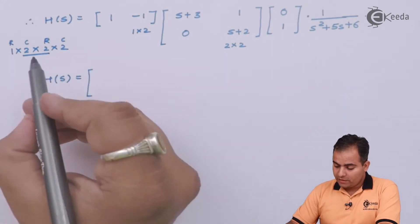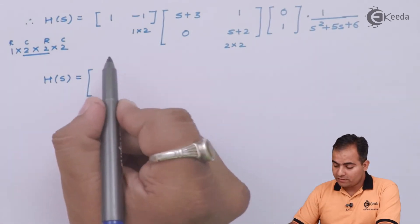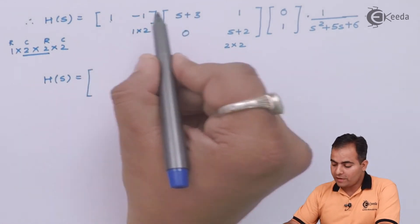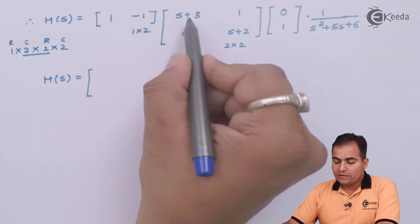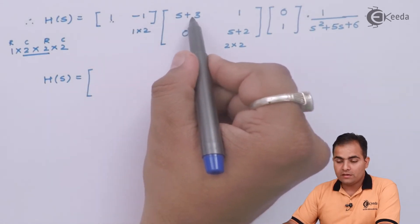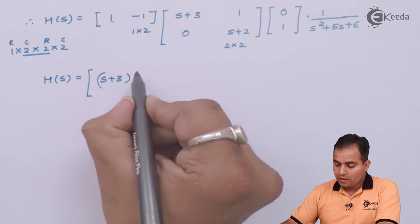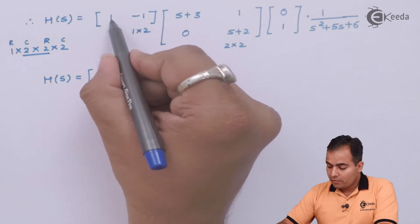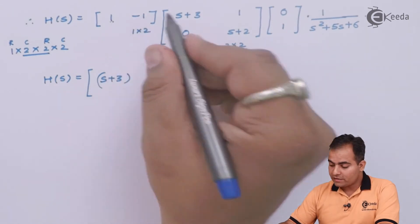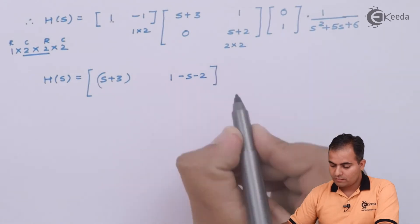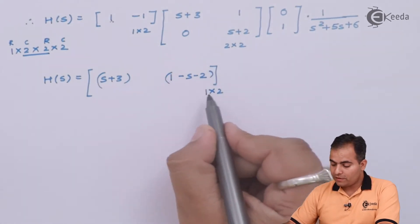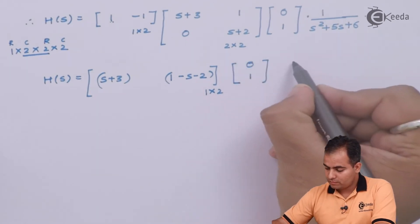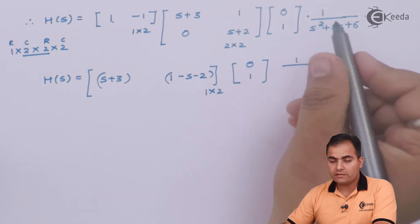Multiplying row by column: 1×(S+3) is S+3, and (−1)×0 is 0, so the first element is S+3. For the second element: 1×1 is 1, and (−1) times the remaining value gives the second element. The result is a 1×2 matrix. This whole product is then multiplied with the B matrix (2×1), and the entire result is multiplied with 1/(S²+5S+6).